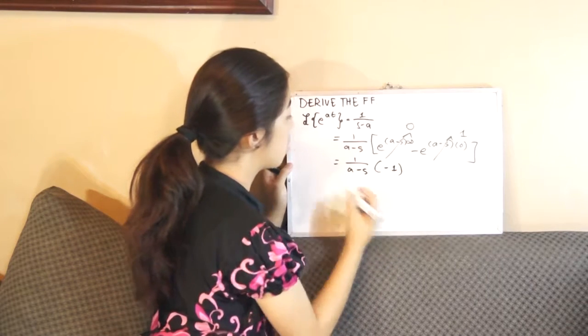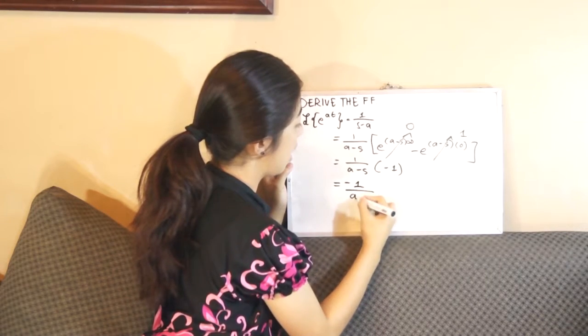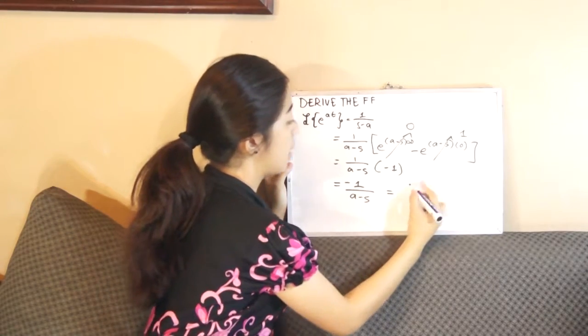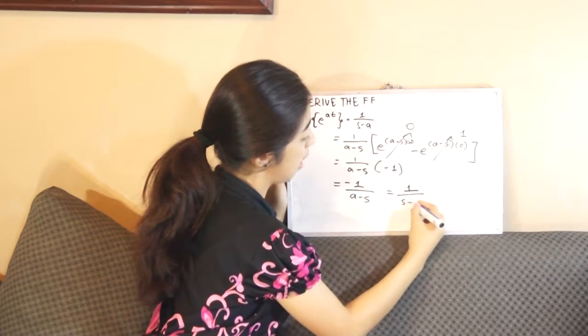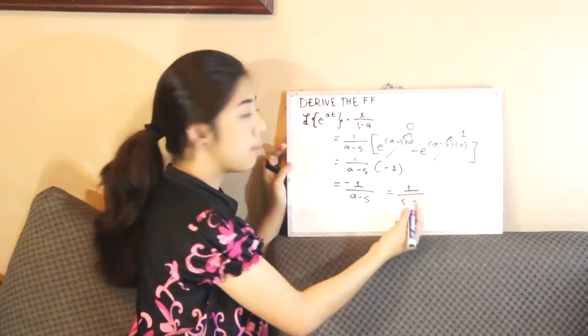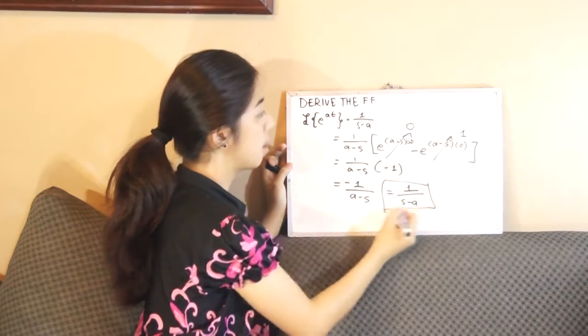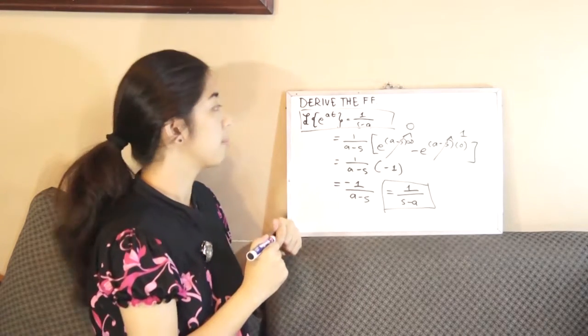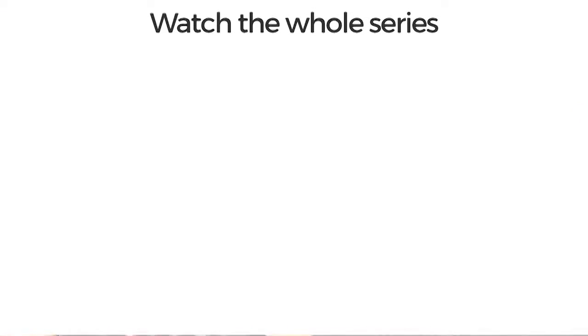We can have negative 1 over a minus s. Also, we can evaluate that as 1 over s minus a. That's the same as the answer we have here, the Laplace transform of e raised to at.